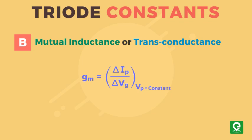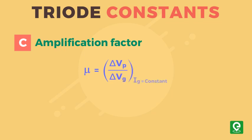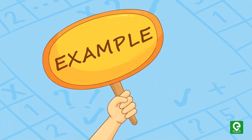Amplification factor is defined as the ratio between change in plate potential, keeping grid potential constant, to the change in grid potential, keeping plate potential constant, in order to bring about same change in plate current. Also, amplification factor is equal to the product of plate resistance and trans-conductance.